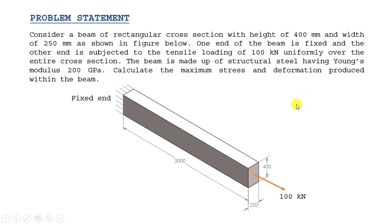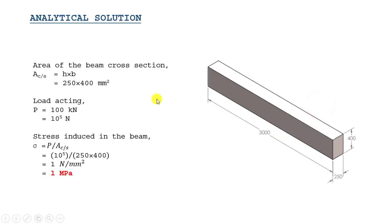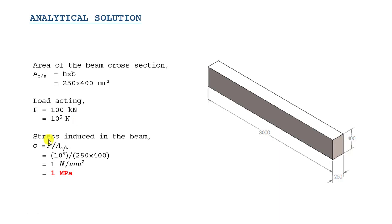First we will find the stress and deformation using the analytical method. The stress produced inside the beam is load per unit cross-section area. The cross-section area is a rectangle, so the area will be height into width. The cross-section area is 250 into 400 mm square. The load acting on the beam is 100 kN, which converts to 10 to the power of 5 N. Substituting these values, the stress induced is 1 mega Pascal.